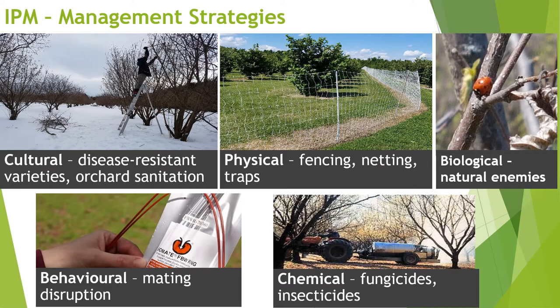Biological controls involve either the introduction or the encouragement of natural enemies within the orchard. In hazelnuts, there is a huge and very diverse population of natural enemies present. Lady beetles are extremely common in the orchard starting in early spring — they wait for bud mites, aphids, and scales to become active, and then start feeding on them. There are also parasitoids and diseases that can be very active against pests, such as with gypsy moth, where parasites and diseases increase over time and help bring gypsy moth populations under control.